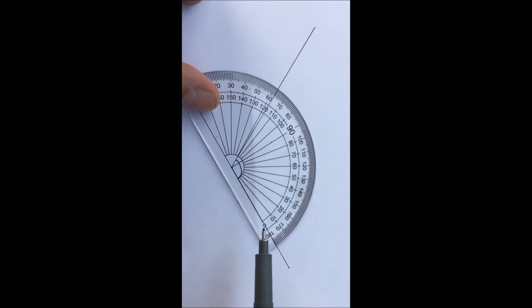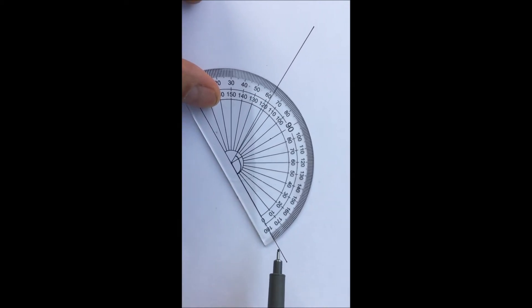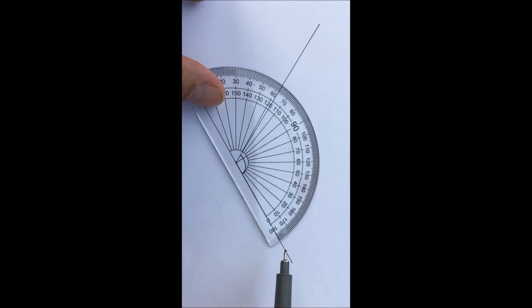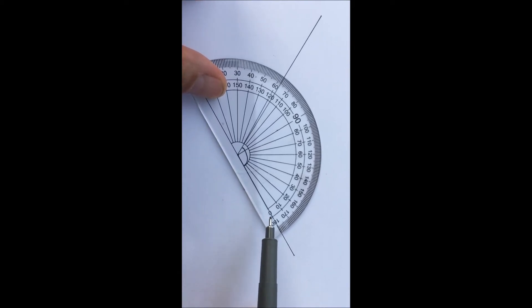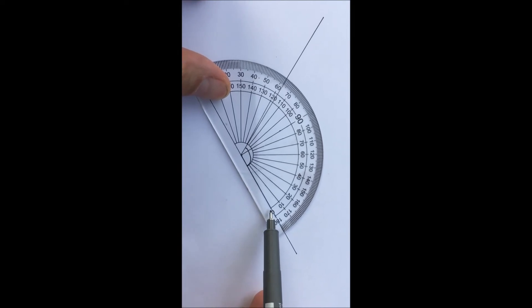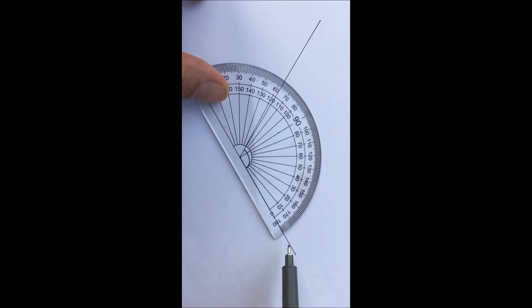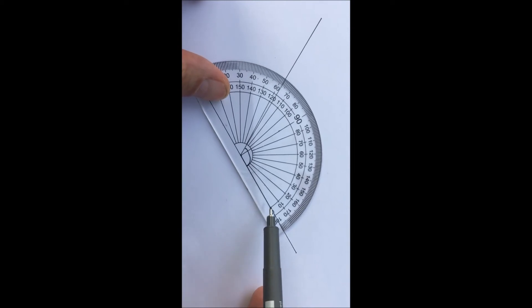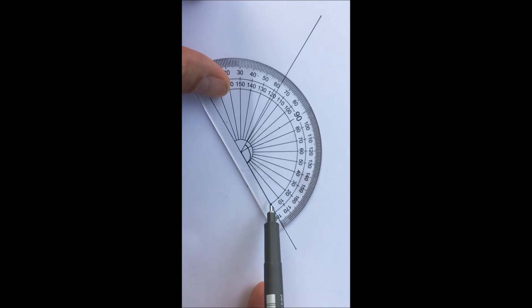Now you can see there are two numbers on the protractor. This line goes through two numbers: zero and 180. You measure from the zero where the line of the angle intersects with the zero. That's where you start measuring.